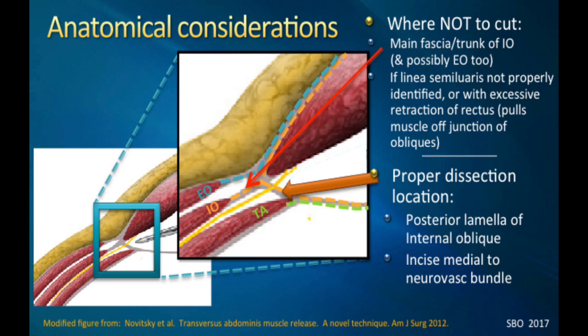Looking at the proper dissection location — again, we're medial to the neurovascular bundles — this allows advancement and still spares the neurovascular bundles. However, if you dissect lateral to these neurovascular bundles, you may end up compromising and/or destabilizing the lateral abdominal wall. If you cut lateral, you can end up not only dissecting that posterior lamella, but you can end up cutting both your external and your internal obliques, which can totally destabilize the linea semilunaris.